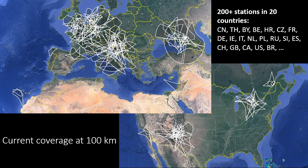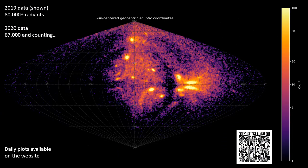This is the current coverage of the network at a height of 100 kilometers. We currently have more than 200 stations in 20 different countries. Most of Central and Western Europe is well covered. We have more cameras being deployed in northern Spain, Israel, and Ireland. In North America, Ontario and parts of Quebec are covered, and we have a large network in New Mexico, with a couple of stations in Arizona being deployed soon. In 2019 we had about 80,000 radiants, and in 2020 about 67,000 and counting.